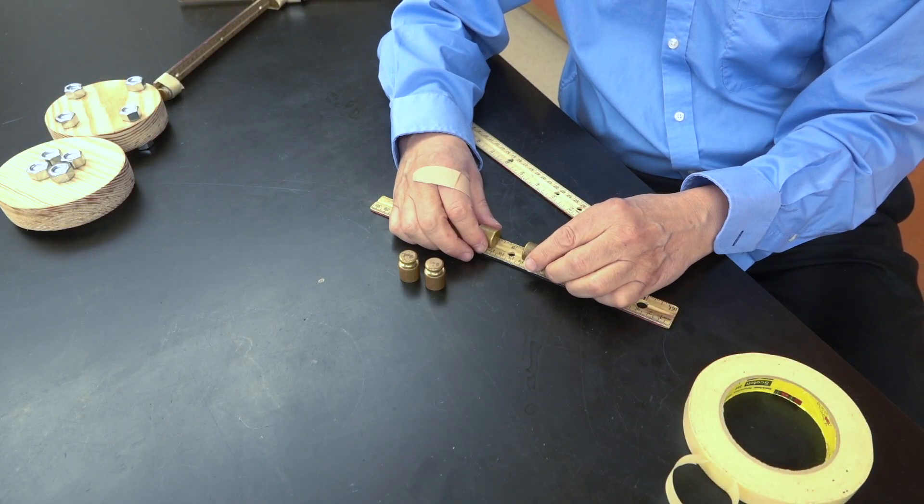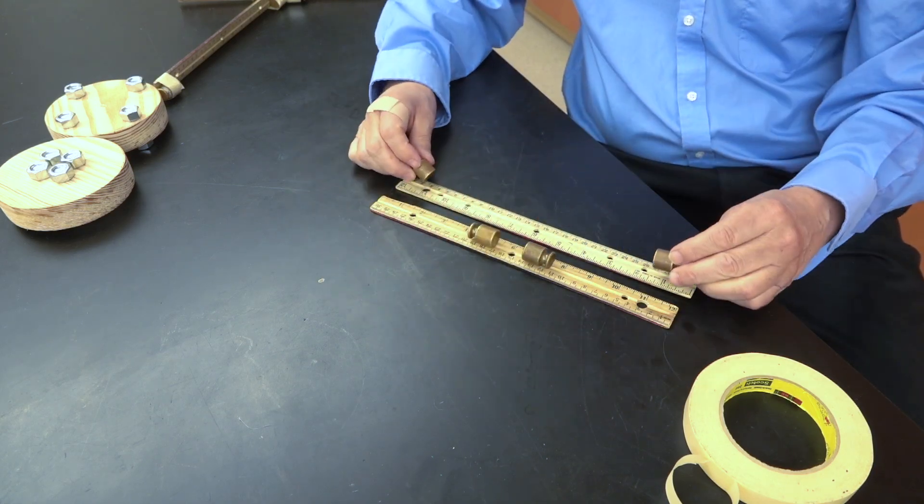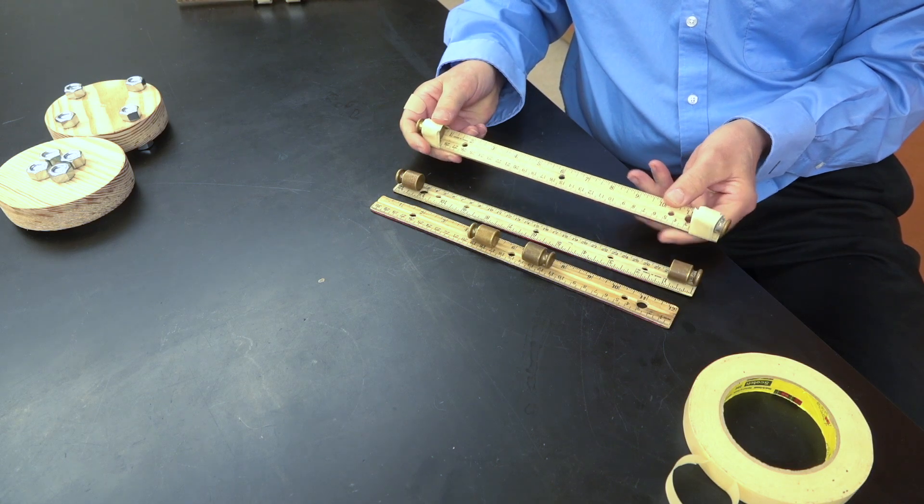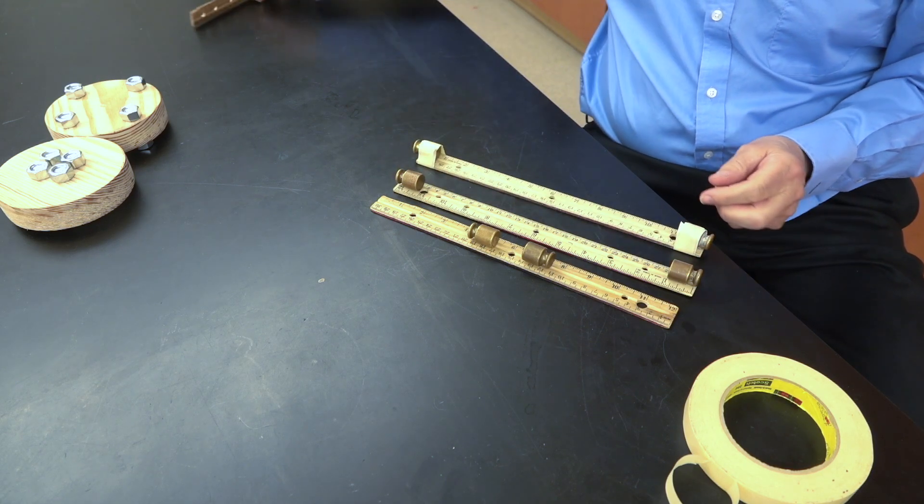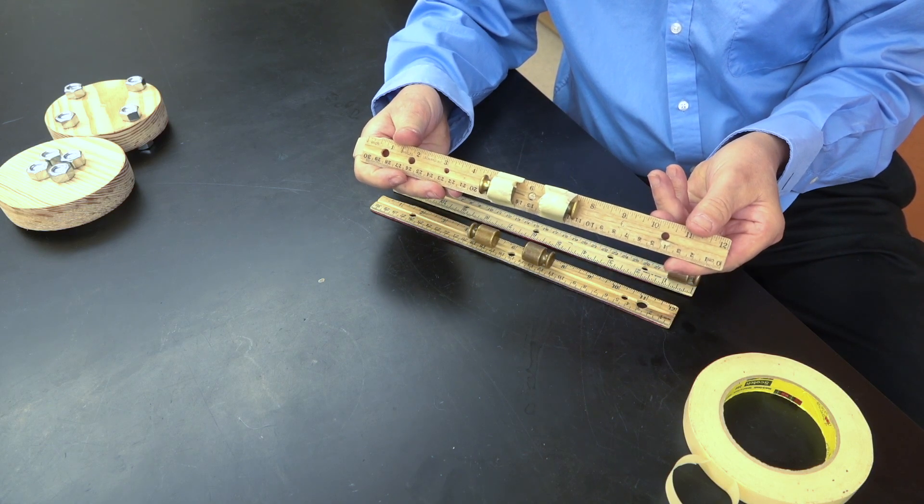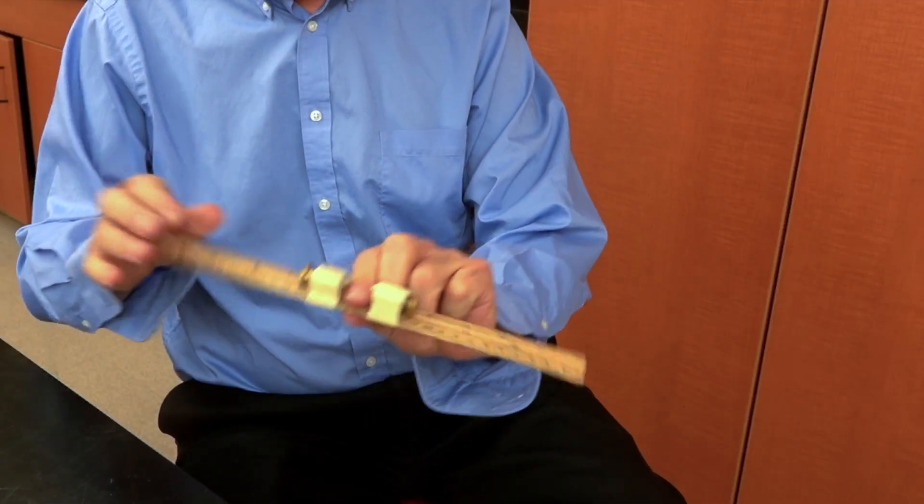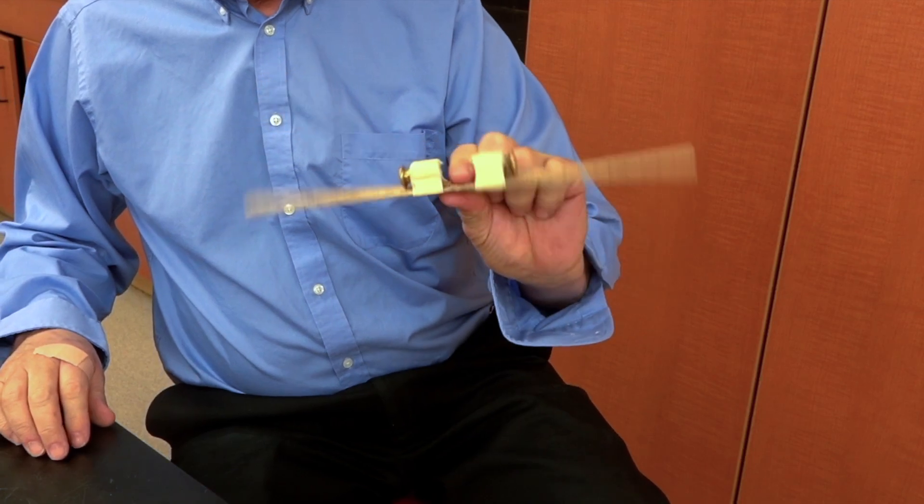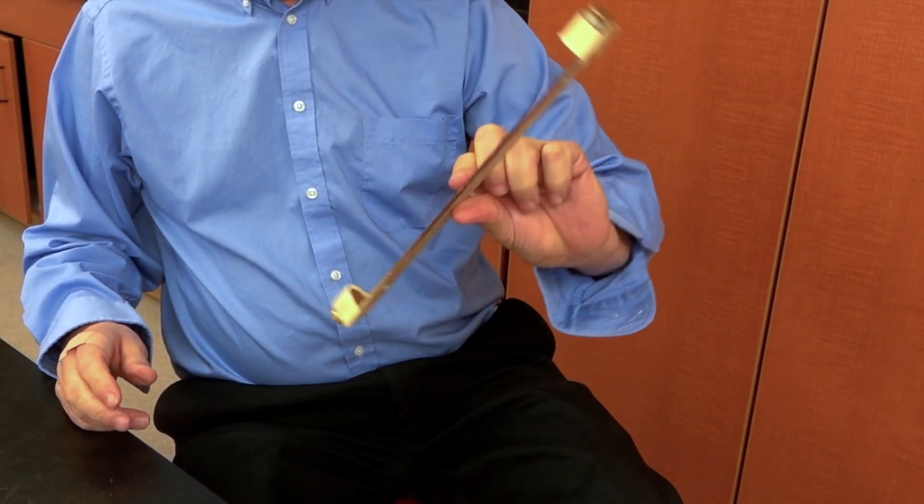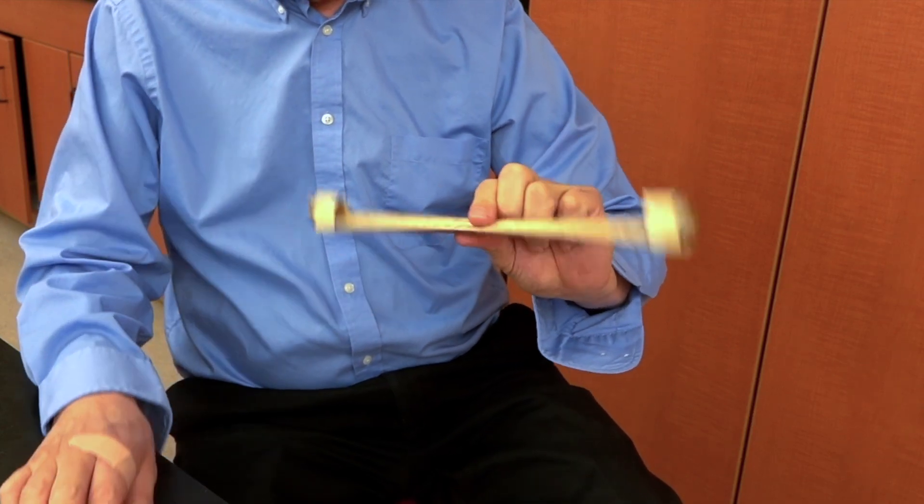We're starting with two rulers and four weights that once again are the same size. On one of the rulers, we're going to tape the weights towards the outside. And on the second ruler, we're going to tape the weights towards the center. Now that they're ready to go, take each ruler and twist it back and forth very quickly between your thumb and finger and you should feel a big difference between them.